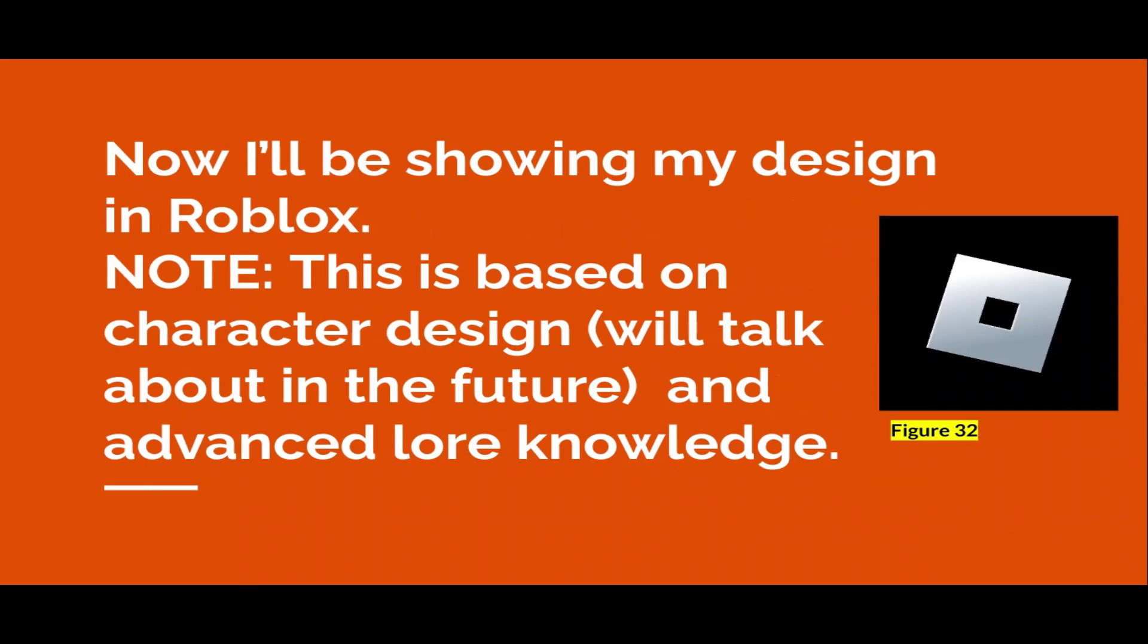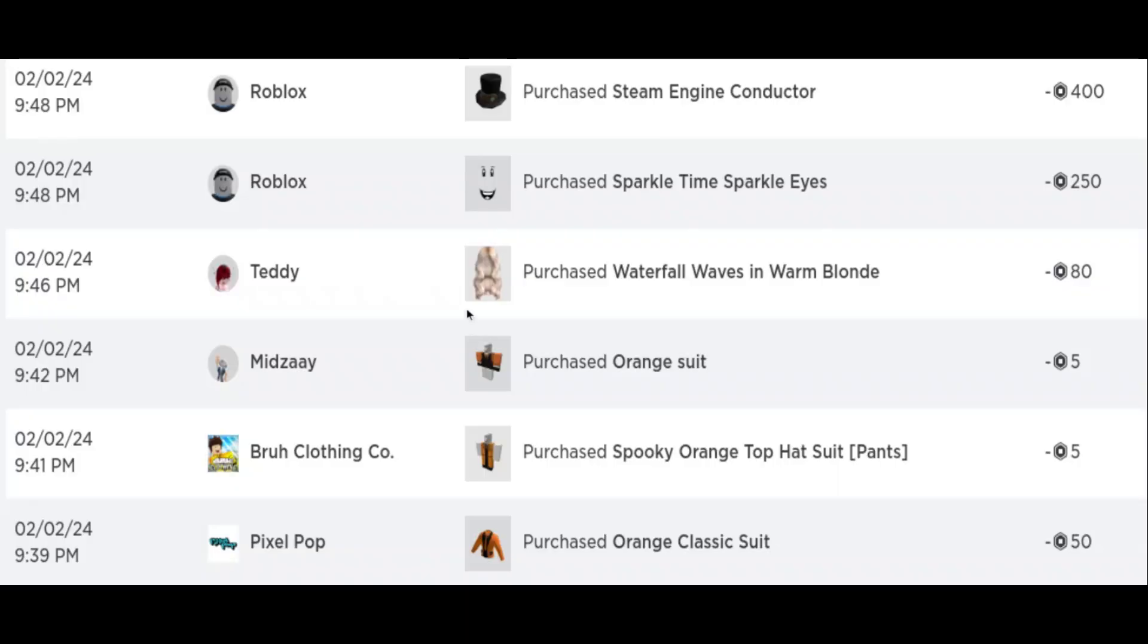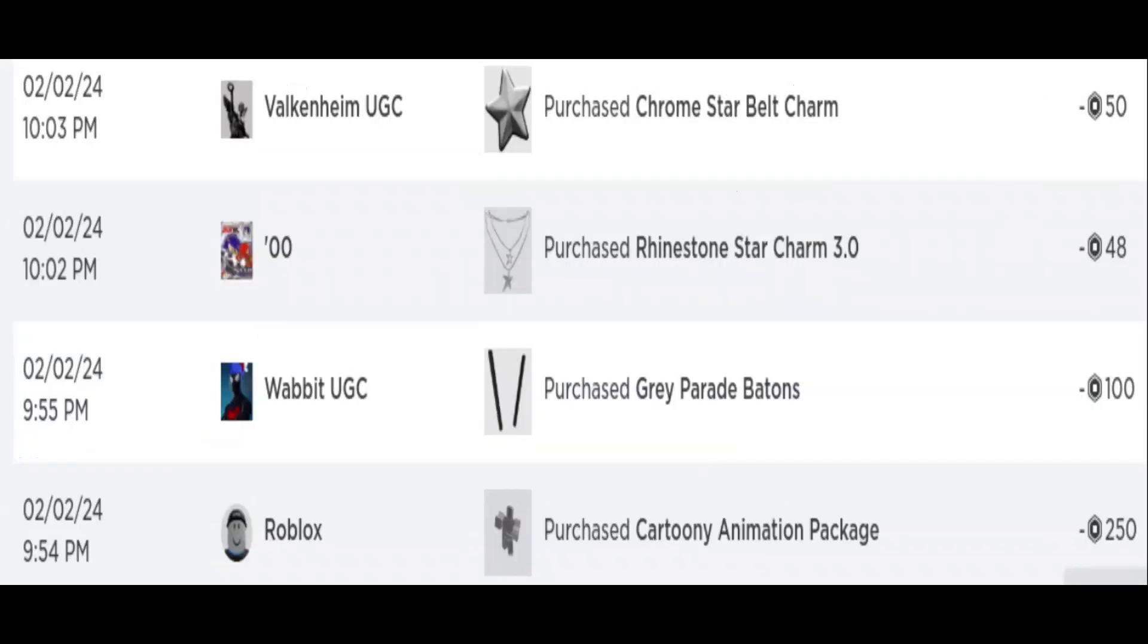Now I'll be showing my design in Roblox. This is based on Luna's character design. We'll talk about the future and some advanced lore knowledge. So now we get chapter 5, overall costs. So this is everything I bought. The purchase steam engine conductor for 400 Robux. Purchase sparkle time sparkle eyes for 250 Robux. Purchase waterfall waves in warm blonde 80 Robux. This is the most expensive so far. This one, this build is a bit more expensive than Gordon. I'll show you the comparison later. Orange suit for 5 Robux. Purchase spooky orange top hat suit pants for 5 Robux. And purchase orange classic suit for 50 Robux. Part of the reason why it's so expensive is I chose to buy normal clothing and layered clothing. I didn't really do that for Gordon. And also this costs way too much. I'll have a Google Doc link. I'll talk about it later. I'll have a link in the comments too for if you want a full list. So you can just buy off the list.